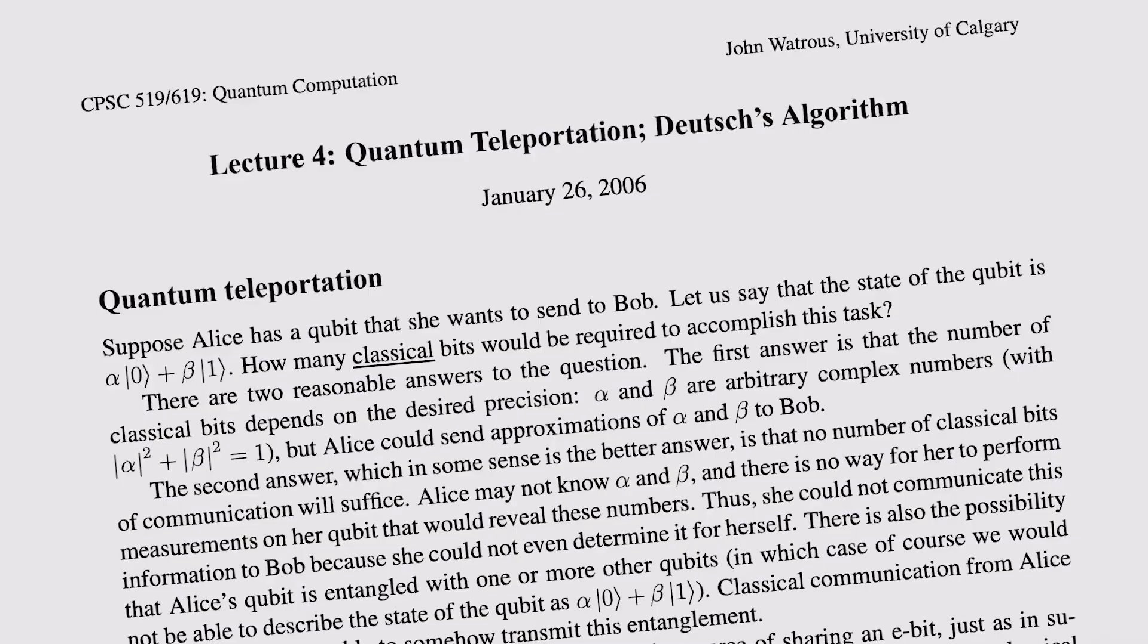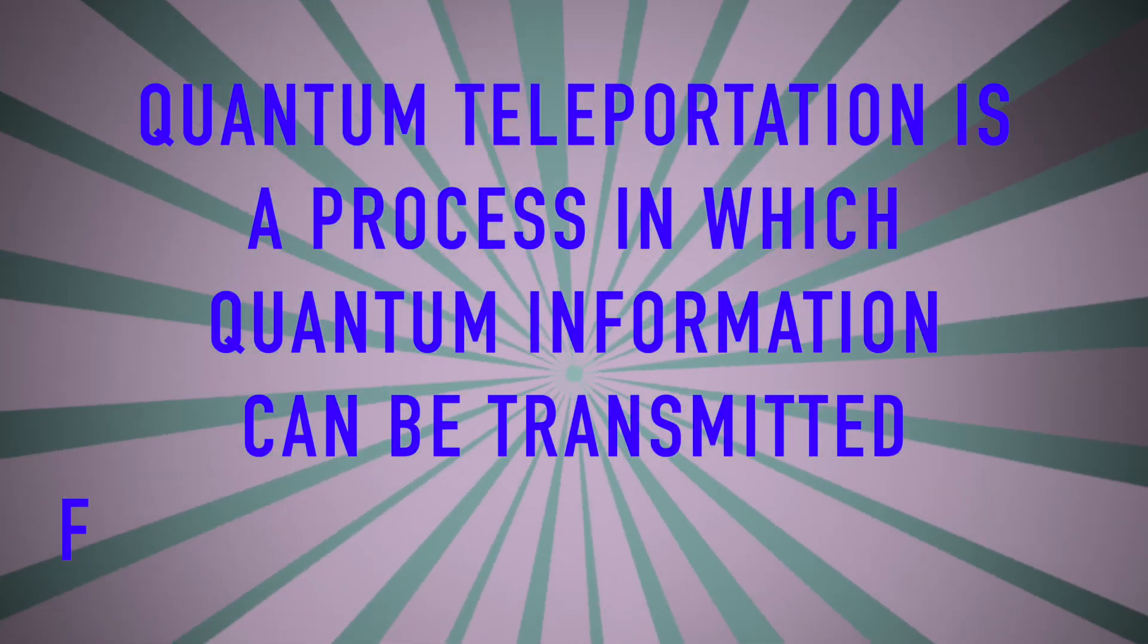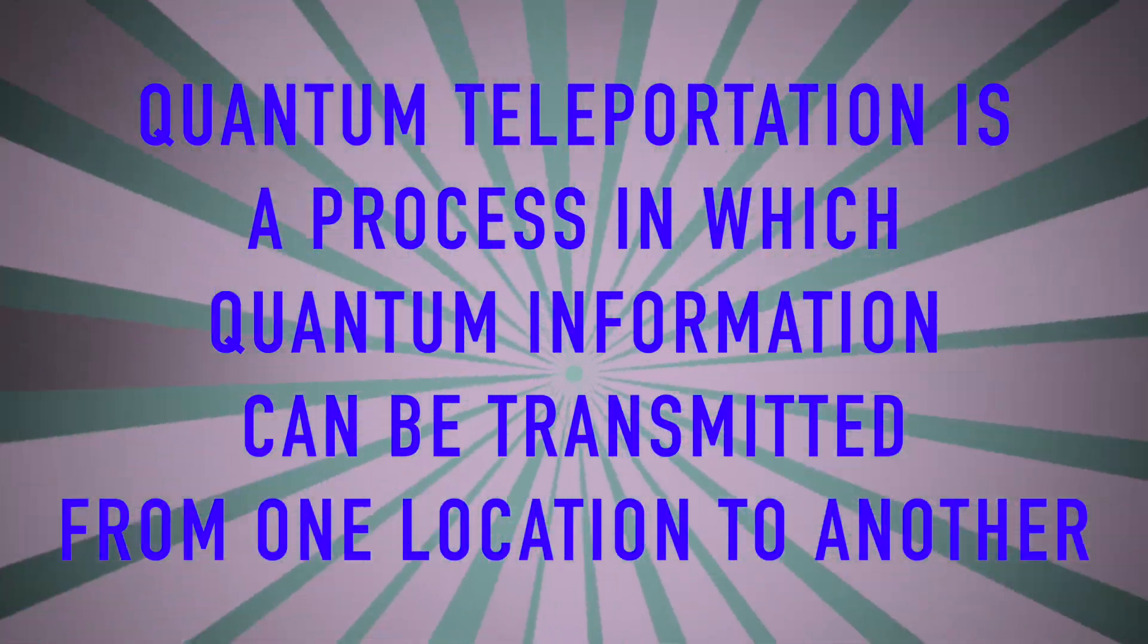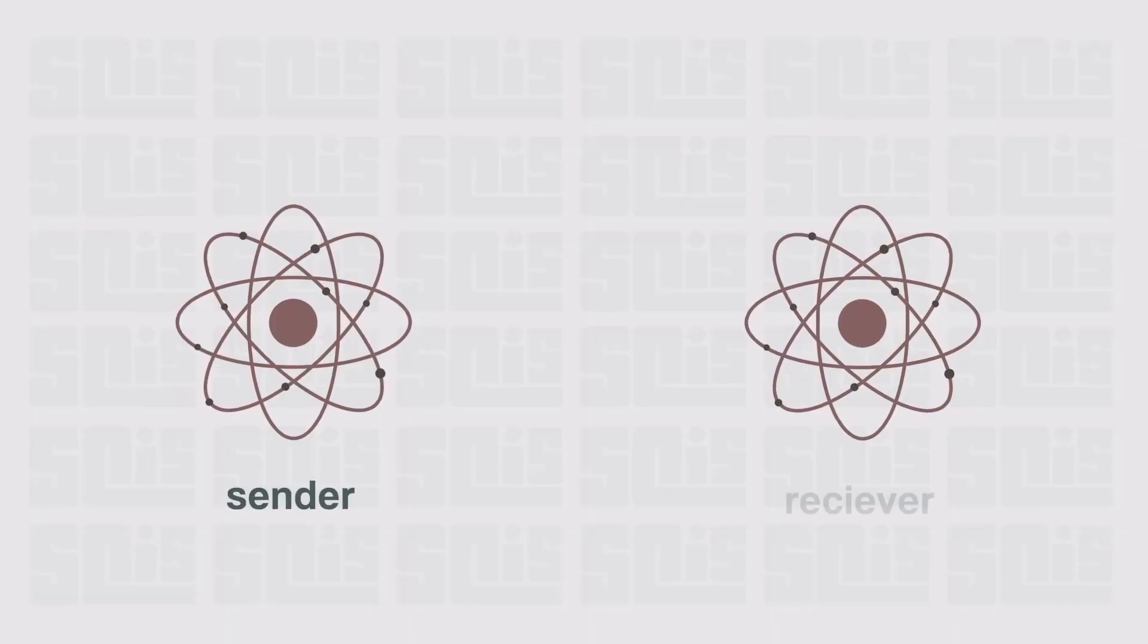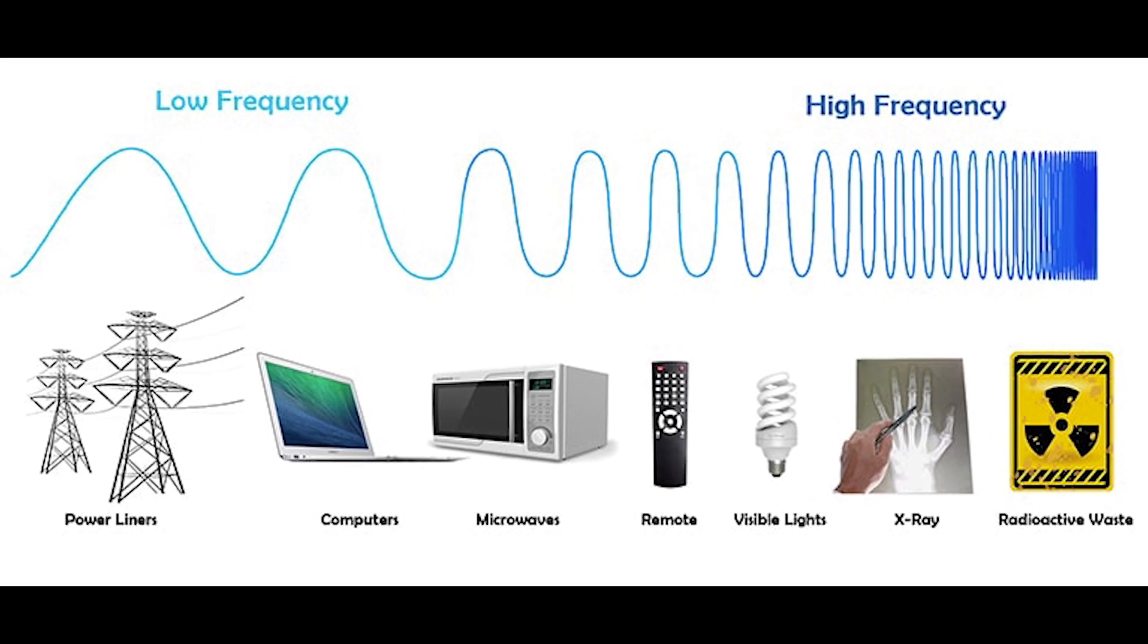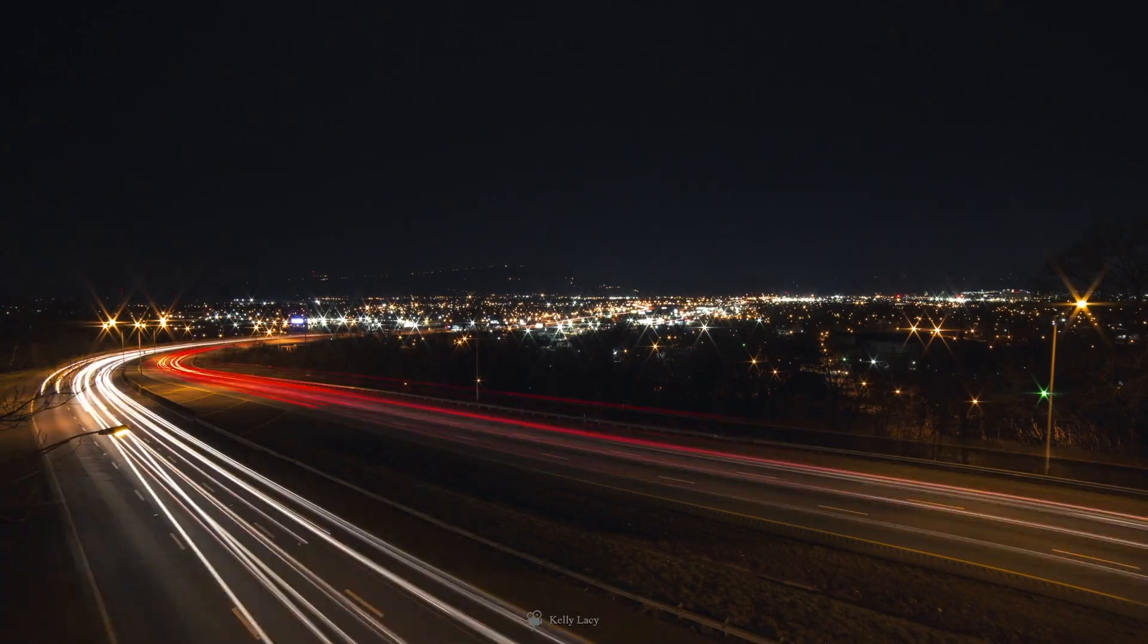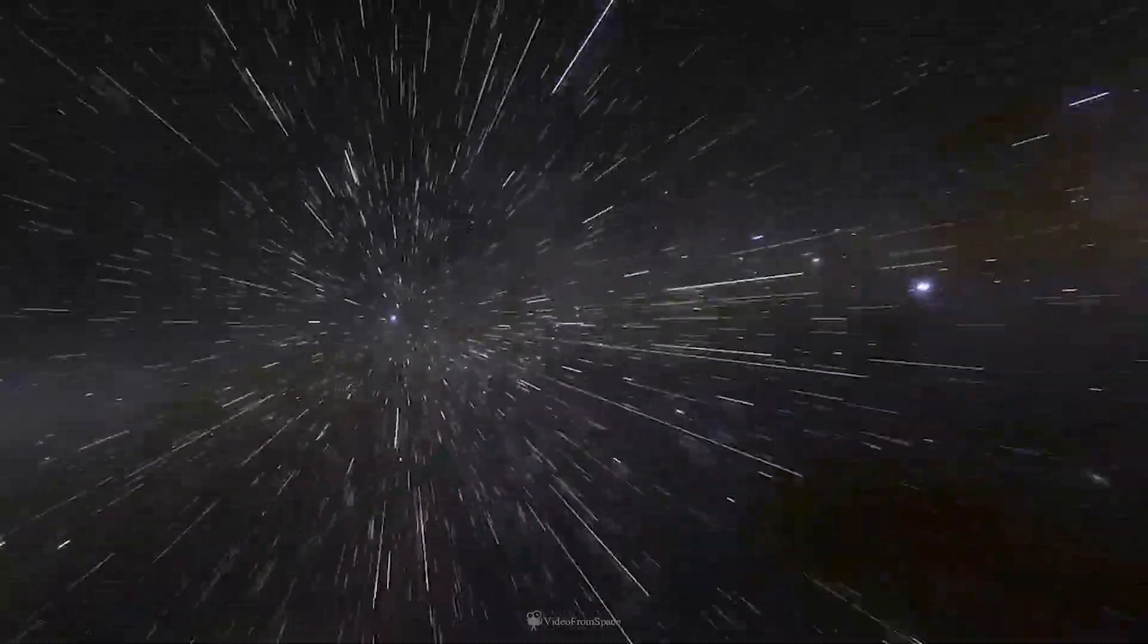Another idea is using quantum mechanics. Quantum teleportation is a process in which quantum information can be transmitted from one location to another. This is done with the help of classical communication and quantum entanglement between the sending and receiving locations. Since it depends on classical communication, which transmits no faster than the speed of light, it cannot be used for faster-than-light transport or communication of classical bits.